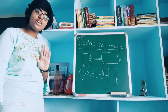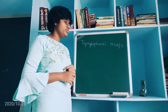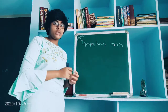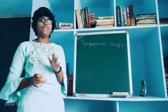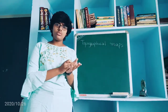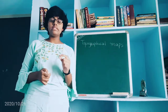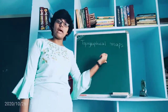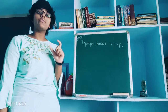Now we have understood cadastral maps. Let's learn about topographical maps. Topographical maps use conventional signs and symbols — the same ones shown in Part 2. These maps are designed entirely using conventional signs and symbols and are made from the Survey of India.